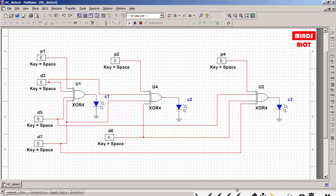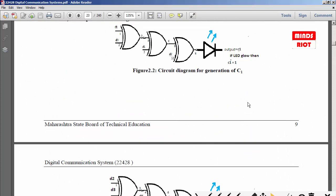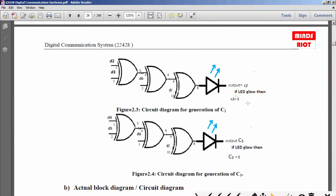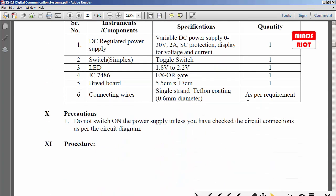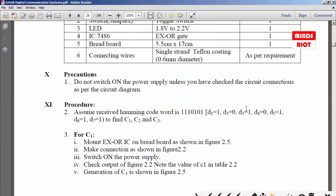Now coming towards the manual, they have given an example where we have to check whether error has occurred in the received bit. The received bit is 1110101. Now we will make these necessary changes in our multi-sim software.